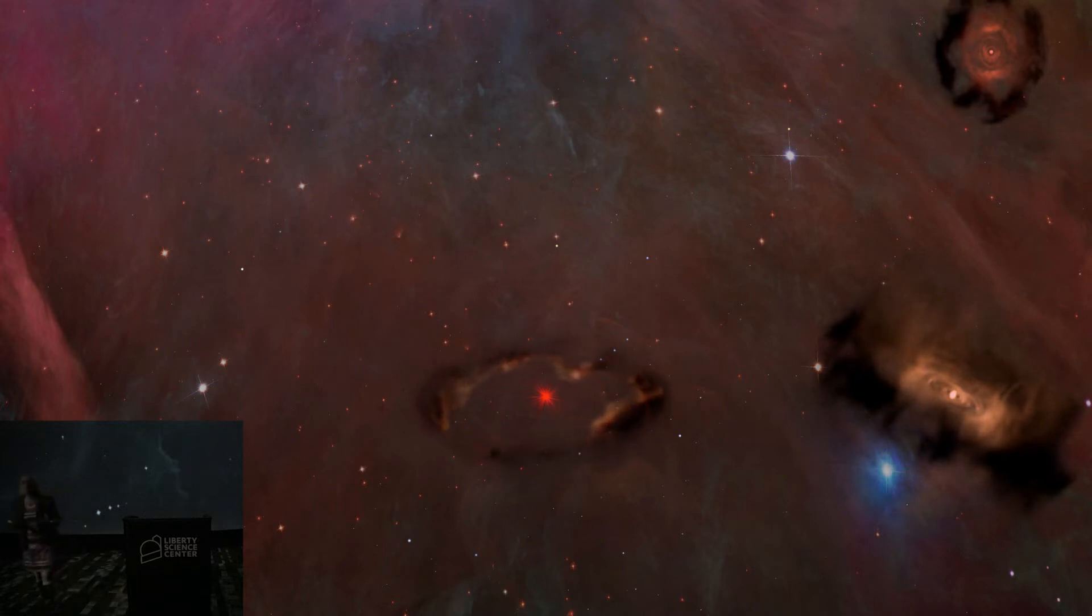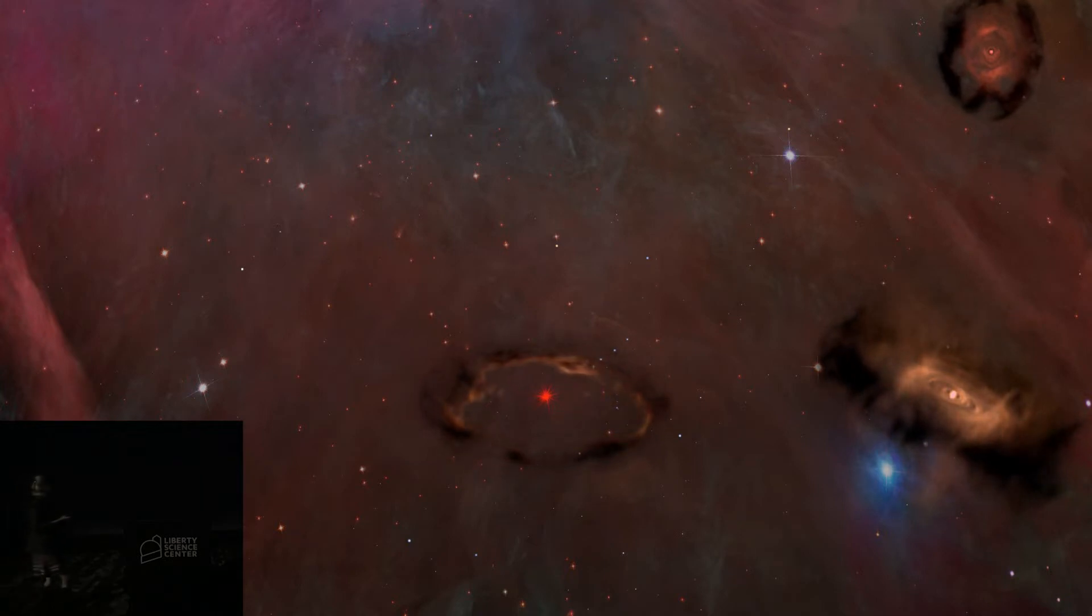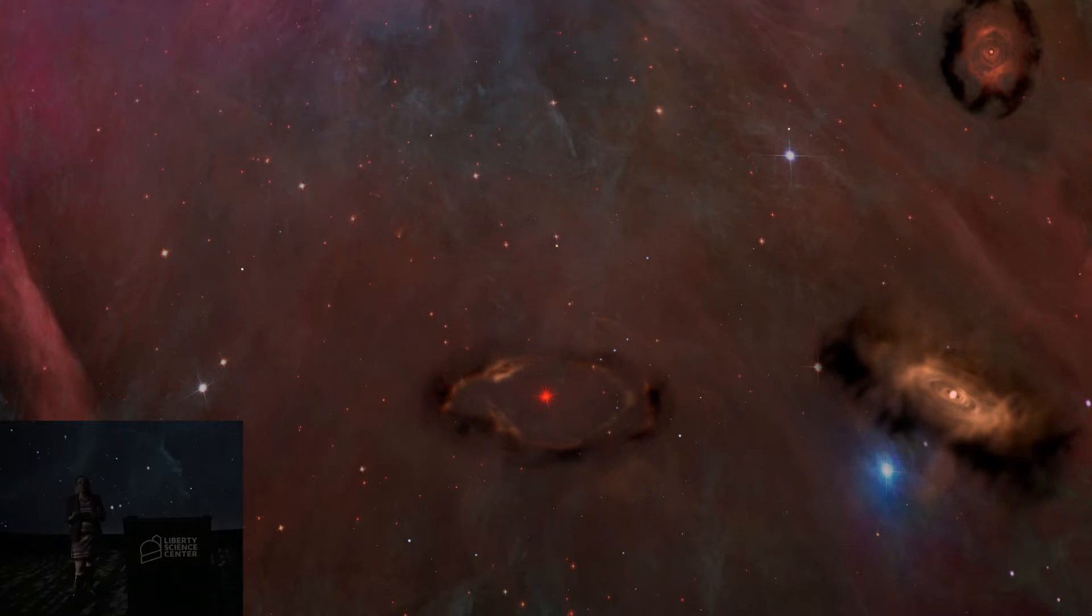A brown dwarf starts out effectively the same way, a collapsing cloud of gas and dust as well. But it doesn't have as much mass to begin with, we think.